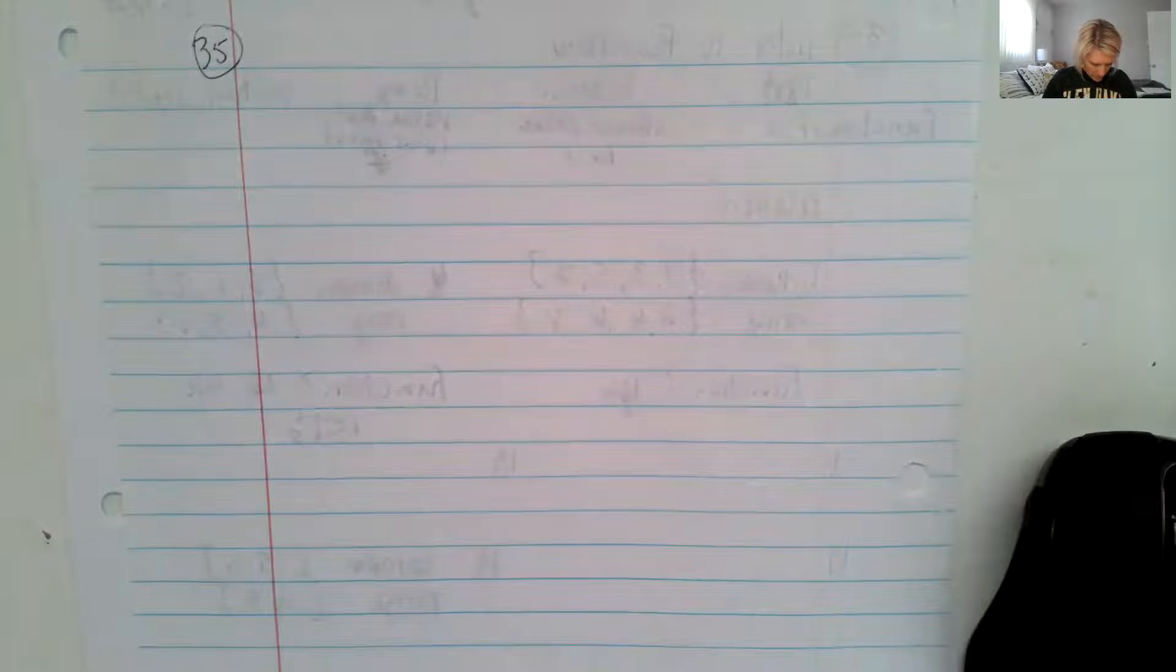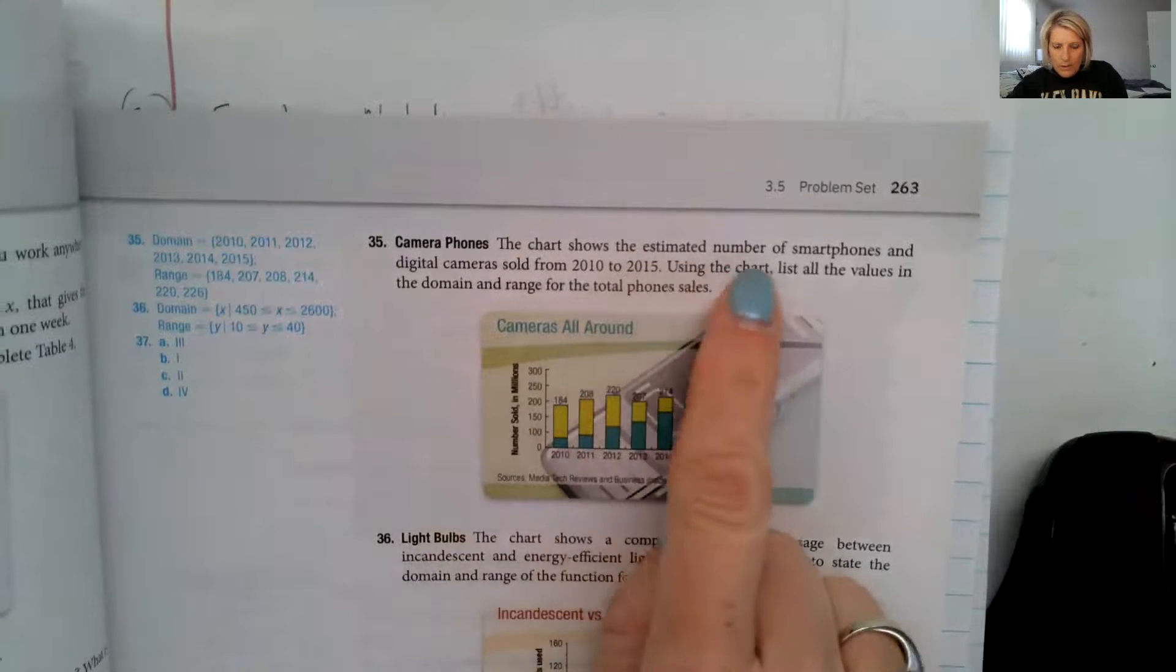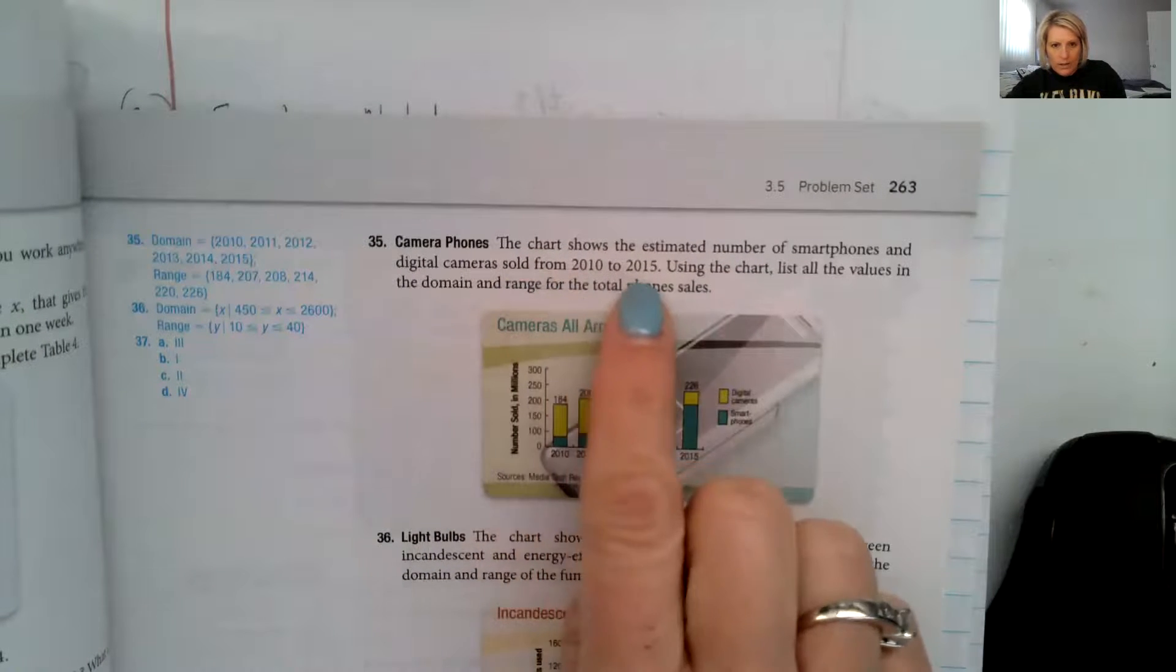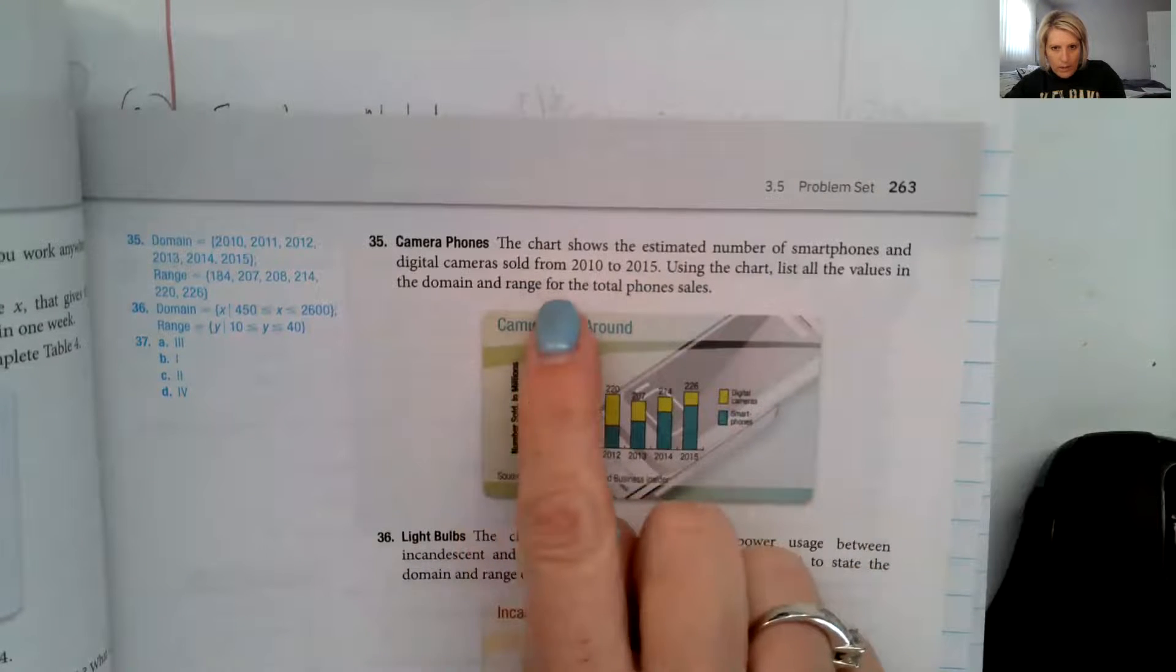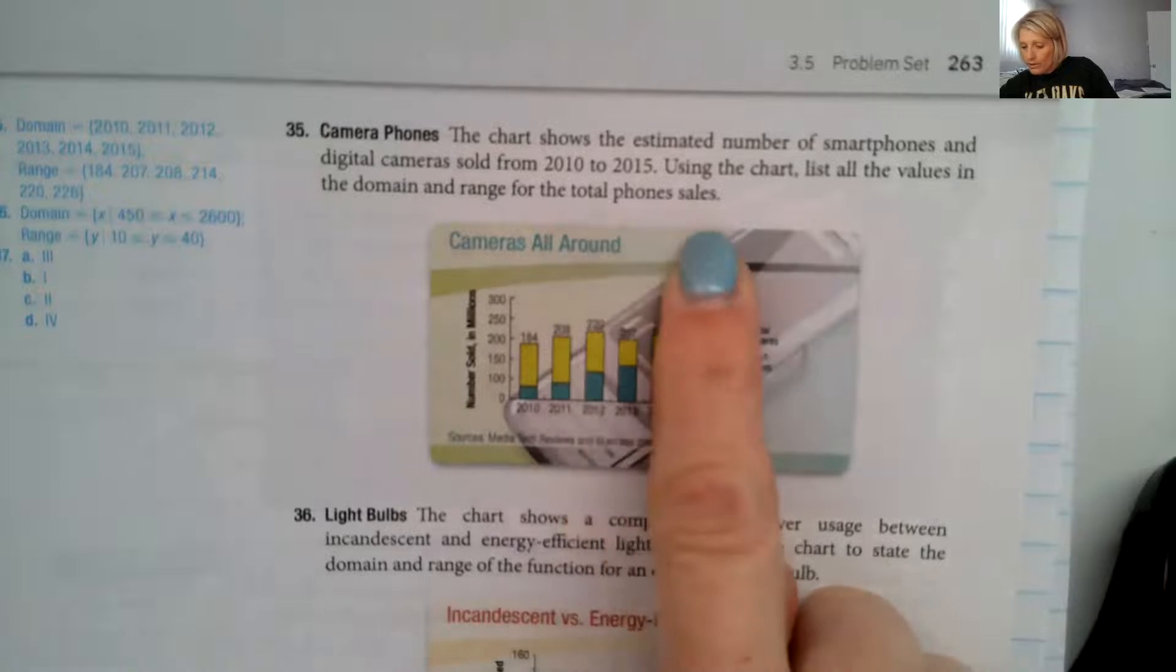So the last one I wanted to look at was number 35 in our book here. Camera phones, the chart shows the estimated number of smartphones and digital cameras sold from 2010 to 2015. Using the chart list, all the values in the domain and range for the total phone sales.